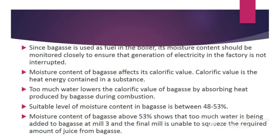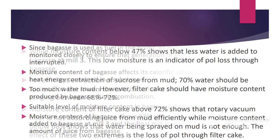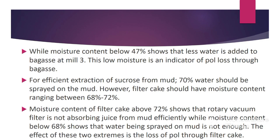Too much water lowers the calorific value of bagasse by absorbing heat produced during combustion. The suitable level of moisture content in bagasse is between 48 to 53 percent. Moisture content above 53 percent shows that too much water is being added to bagasse at mill 3, and the final mill is unable to squeeze the required amount of juice from the bagasse. Moisture content below 47 percent shows that less water is being added to bagasse at mill 3, which is an indicator of sugar loss through bagasse. Water is added at mill 3 to absorb and remove sugar remaining in bagasse for efficient extraction of sucrose.